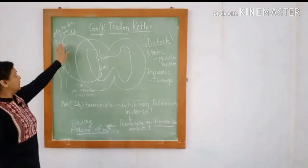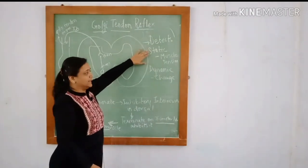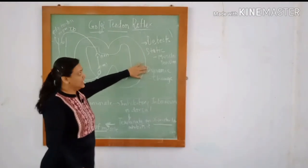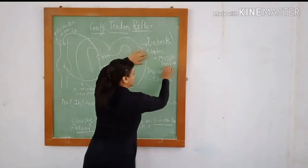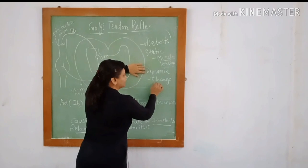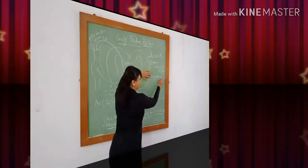Golgi tendon organ detects both static and dynamic response. Static means it detects the muscle tension, and when it detects change in muscle tension, it is called a dynamic response.